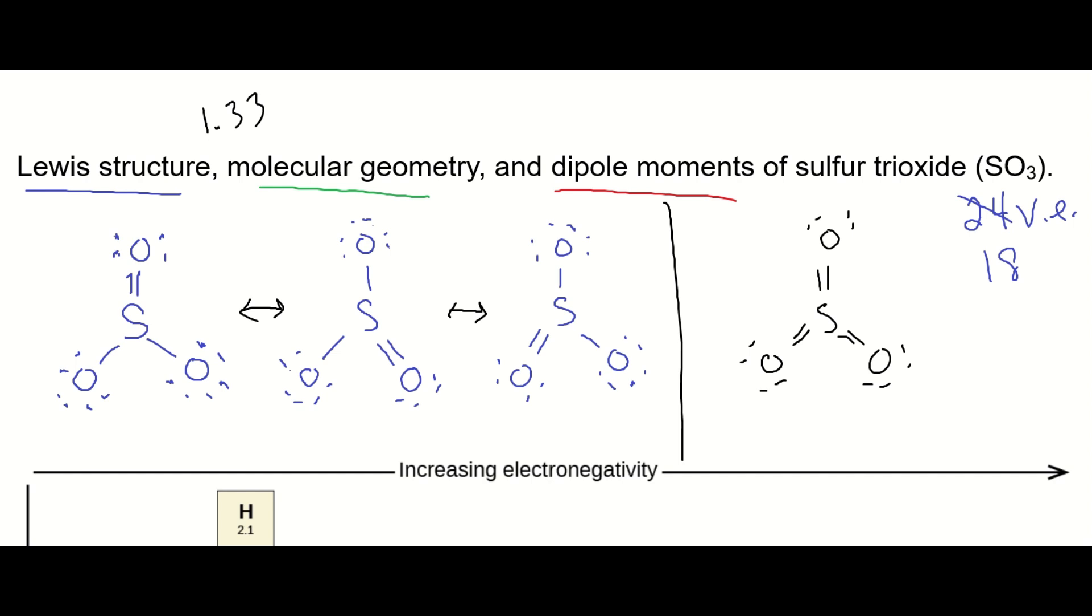Now, on to molecular geometry. It doesn't matter which one of these you use because each of them has a sulfur that's central that has three regions of electron density, or steric number three. And so when you have three regions of electron density, and there are no lone pairs, in other words, they're all connected to other atoms, then that molecular geometry is trigonal planar.